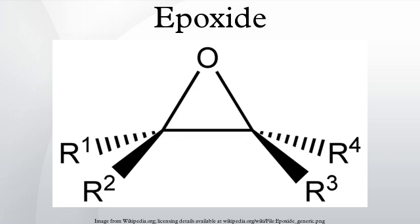More typically for laboratory operations, the Prilezhaev reaction is employed. This approach involves the oxidation of the alkene with a peroxyacid such as MCPBA. Illustrative is the epoxidation of styrene with perbenzoic acid to styrene oxide. The reaction proceeds via what is commonly known as the butterfly mechanism.